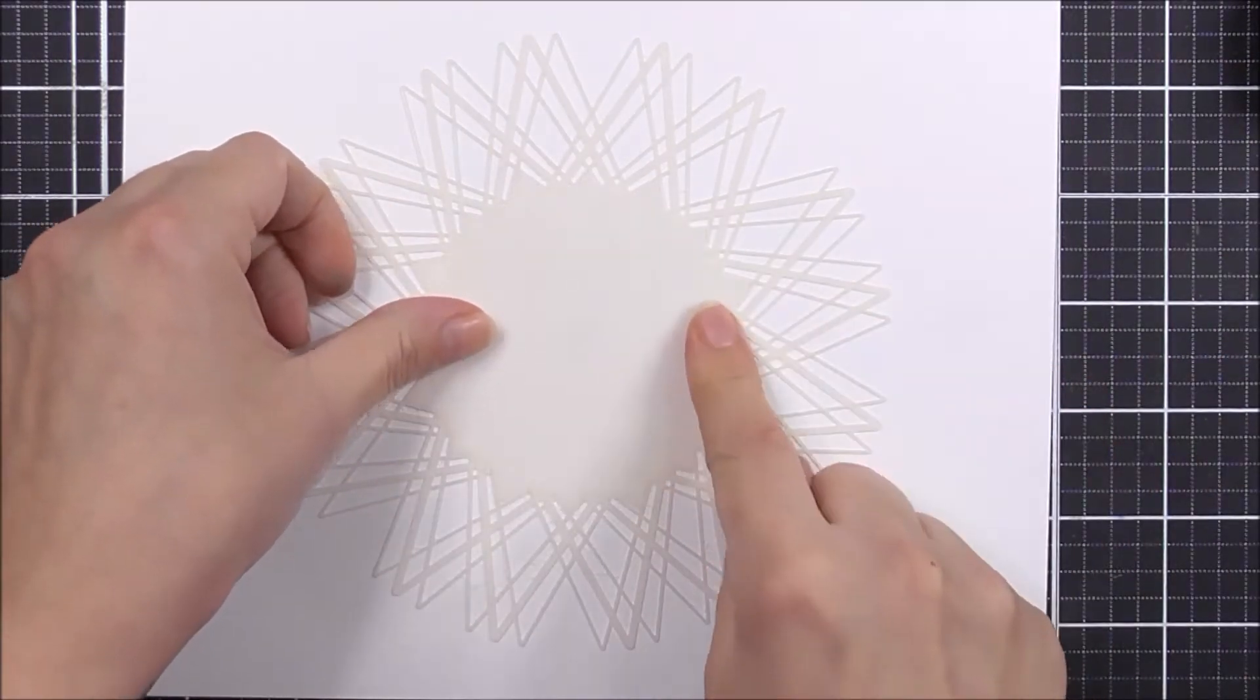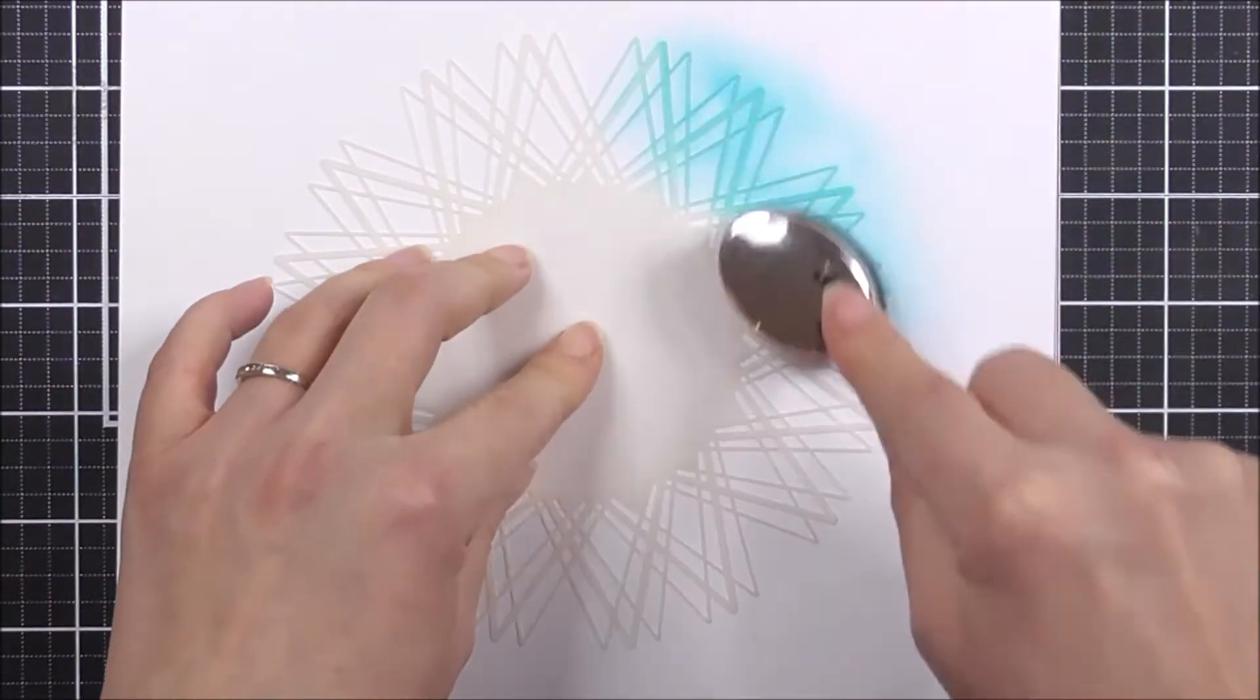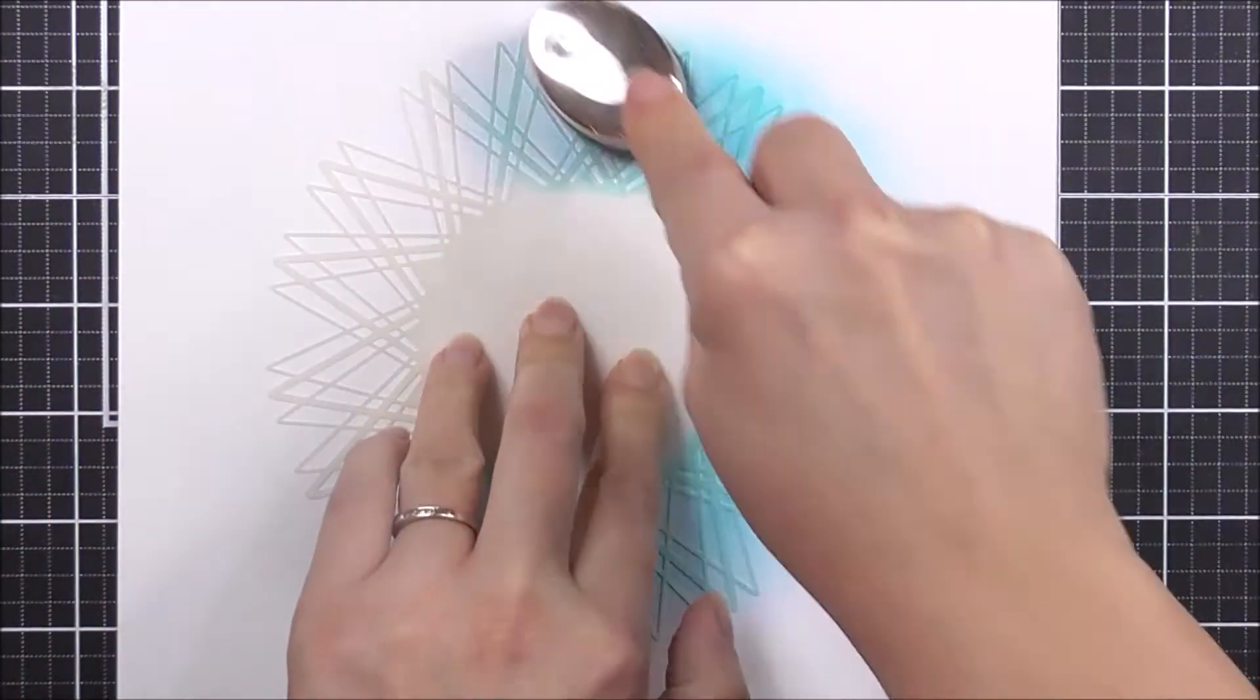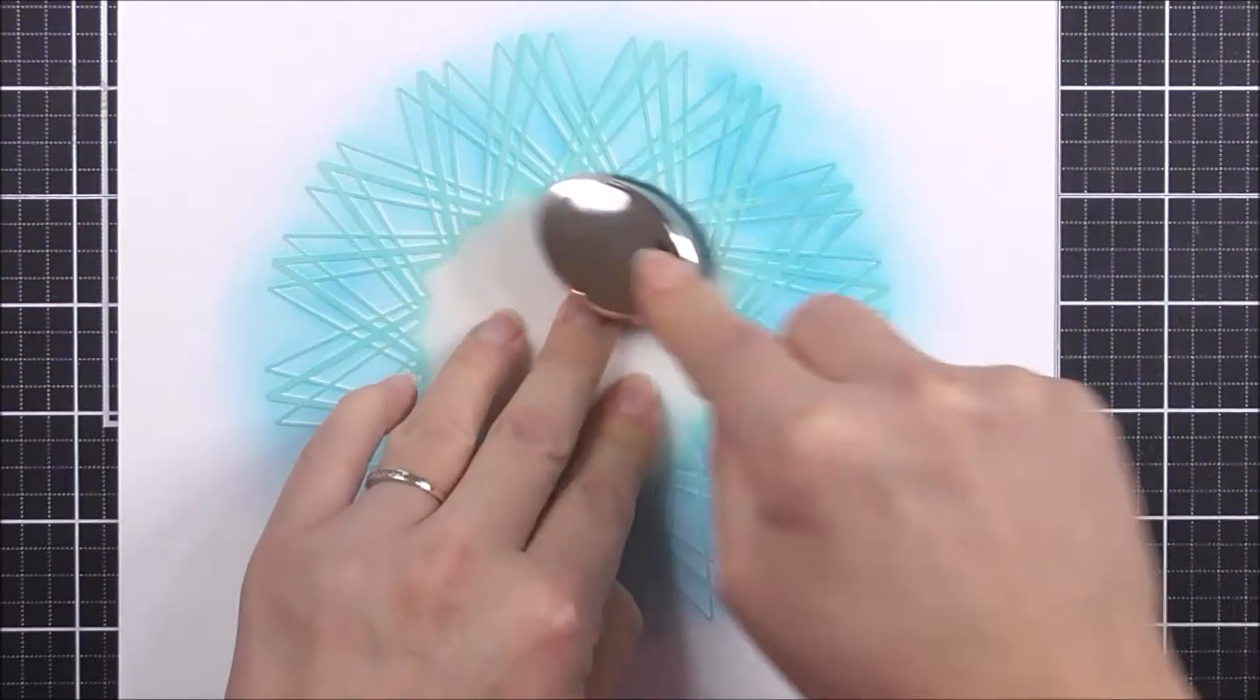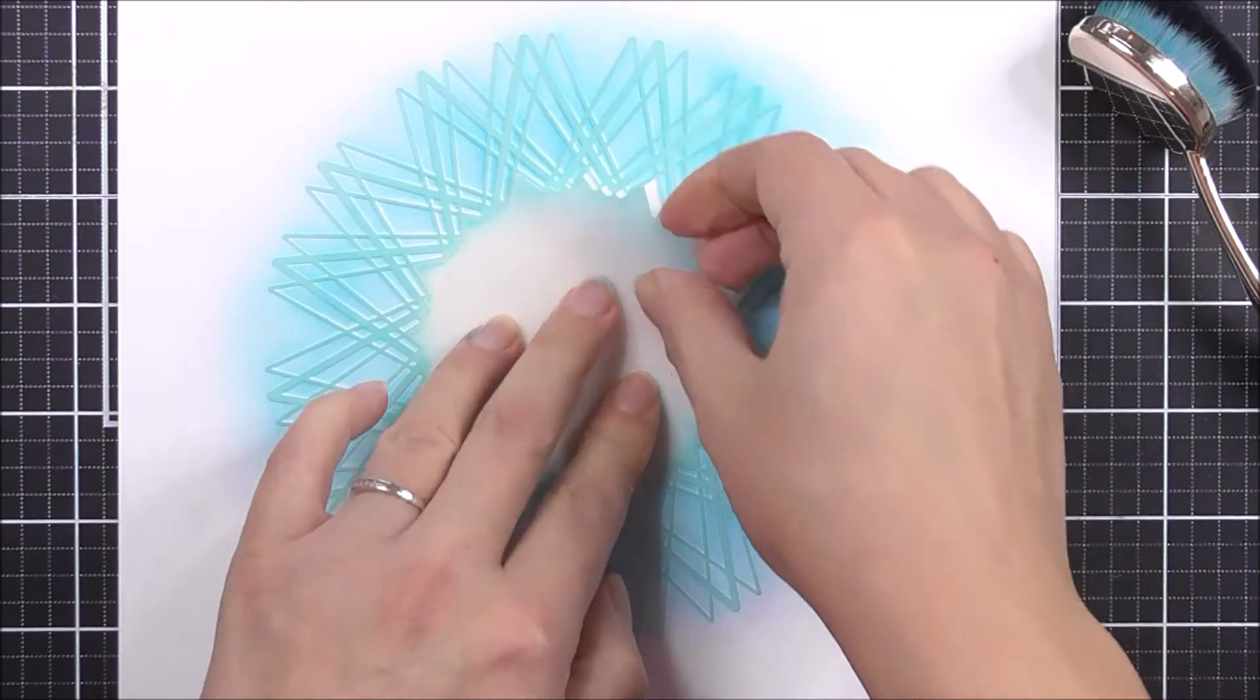Geometric Roulette is a two-piece stencil that will help you create a stunning geometric pattern on your card or project. With the two pieces you can use them separately or by themselves to create various different looks on your projects.